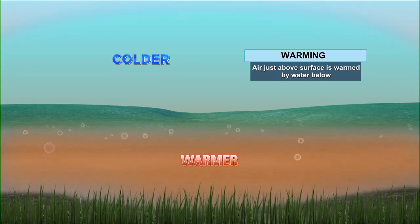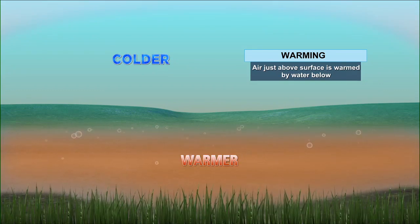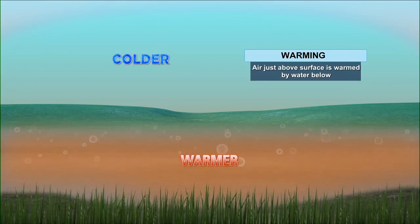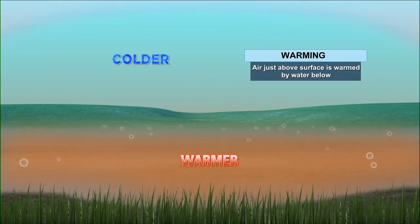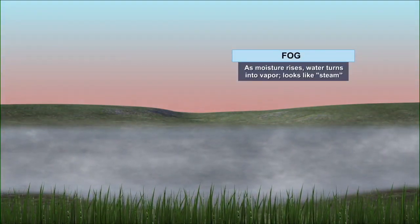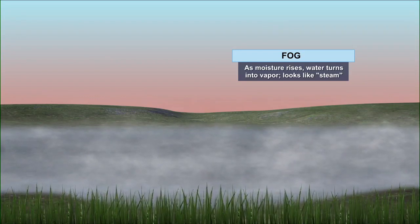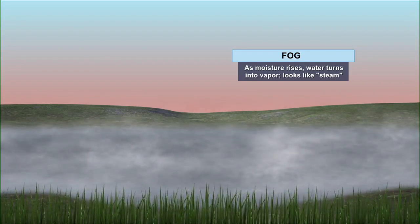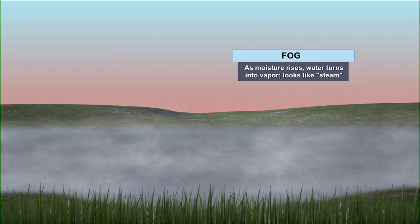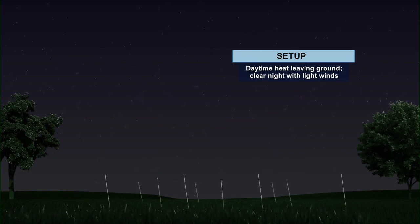Next is warming. The air just above the surface is warmed by the water below, and that's when we start to see the fog form. As moisture rises, water turns into vapor and it looks like steam — voilà, you're dealing with fog. That was a recap of steam fog.